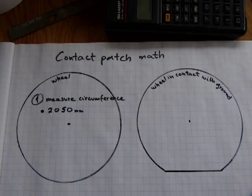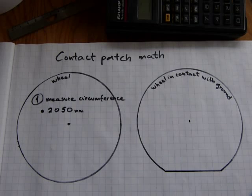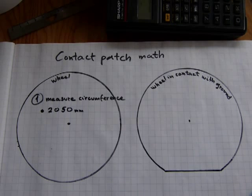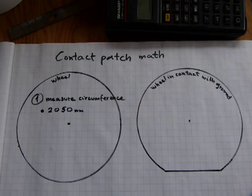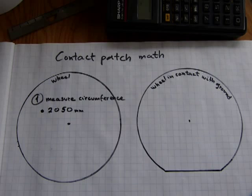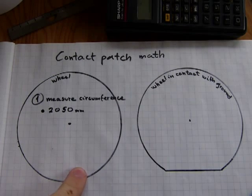If you wanted to see how under-inflated tires affect the top speed of your machine, here is a calculation that considers the difference in circumference that the contact patch causes. For this calculation, take a look at these shapes.